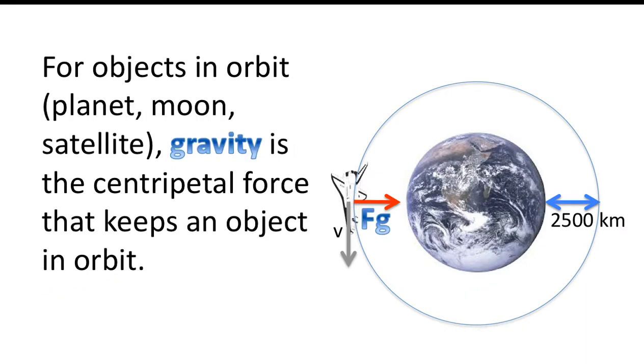For objects in orbit, whether it's a planet, a moon, or a satellite, gravity is a centripetal force that keeps an object in orbit. So we label that vector now as Fg.